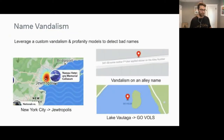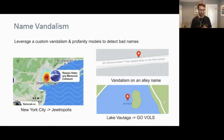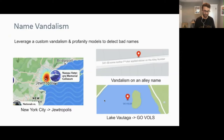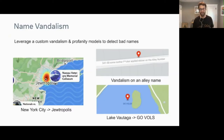I want to talk about a few important things that we look at to make sure the Daylight Map Distribution does not contain. Things like name vandalism — we've actually spent a lot of time leveraging a custom vandalism and profanity model that detects bad names. Probably a lot of people are familiar with New York City being renamed to Jutropolis. Here are a couple of other random examples of vandalism on an alley name, people changing the name of a lake. As we talk about cherry-picking the right versions, we make sure none of this is present on essentially every name tag across the entire planet.